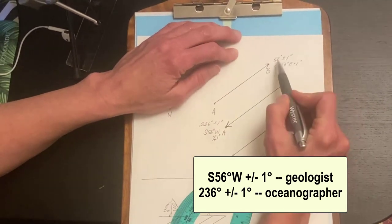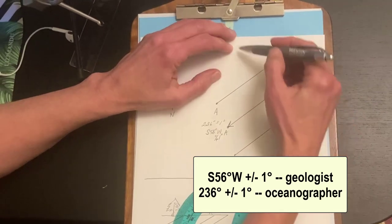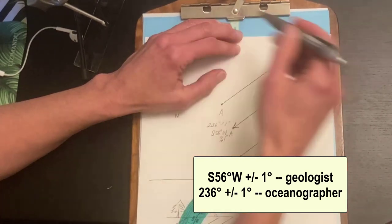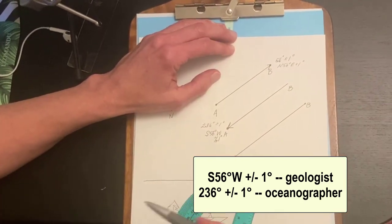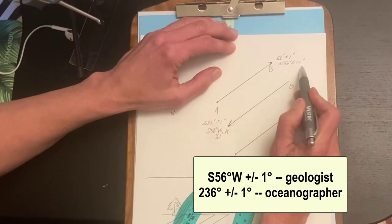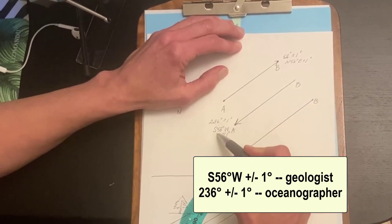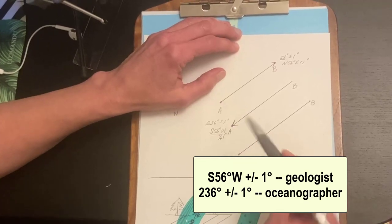Notice that the oceanographer method has no letter because you're starting from north and going clockwise. You don't need a letter to describe that. The geologist method you have to actually bring in the starting point either north or south and then how many degrees to the east or west you travel.